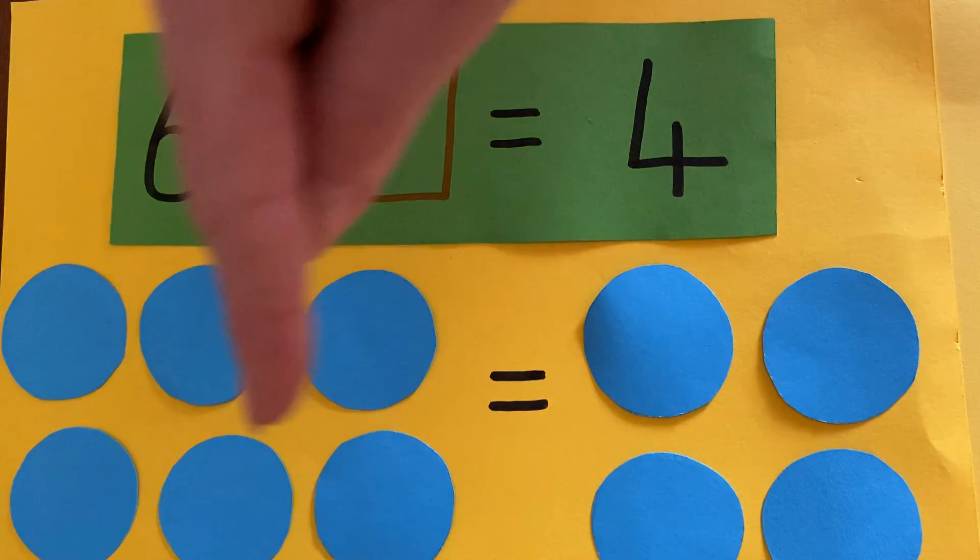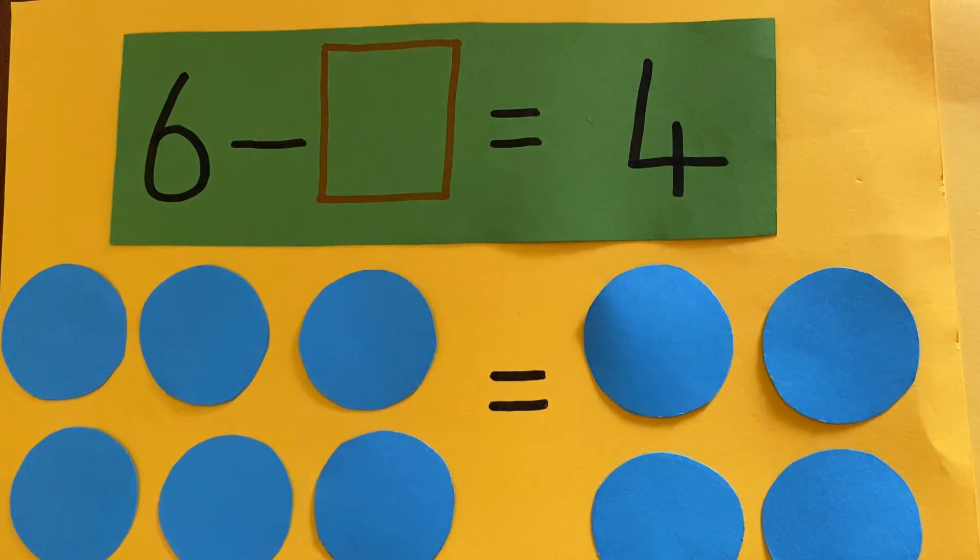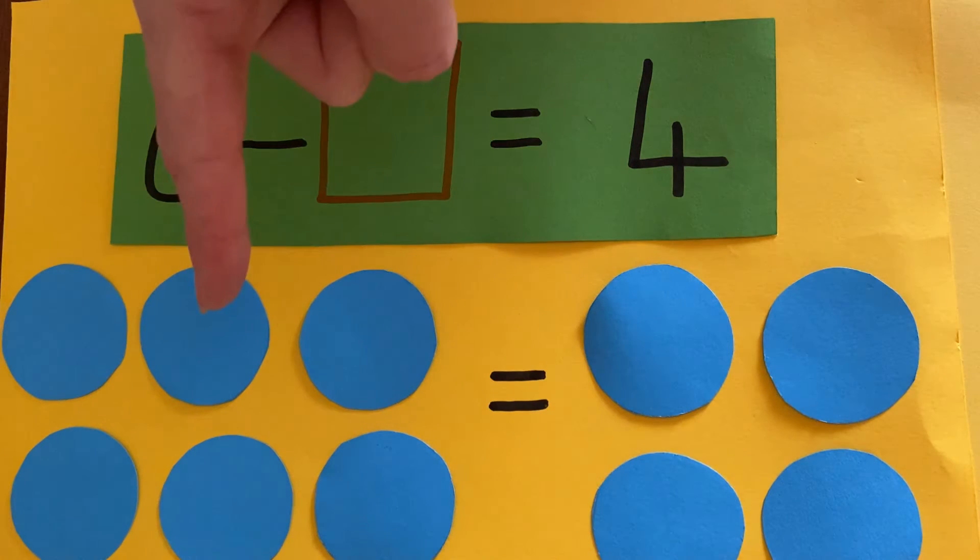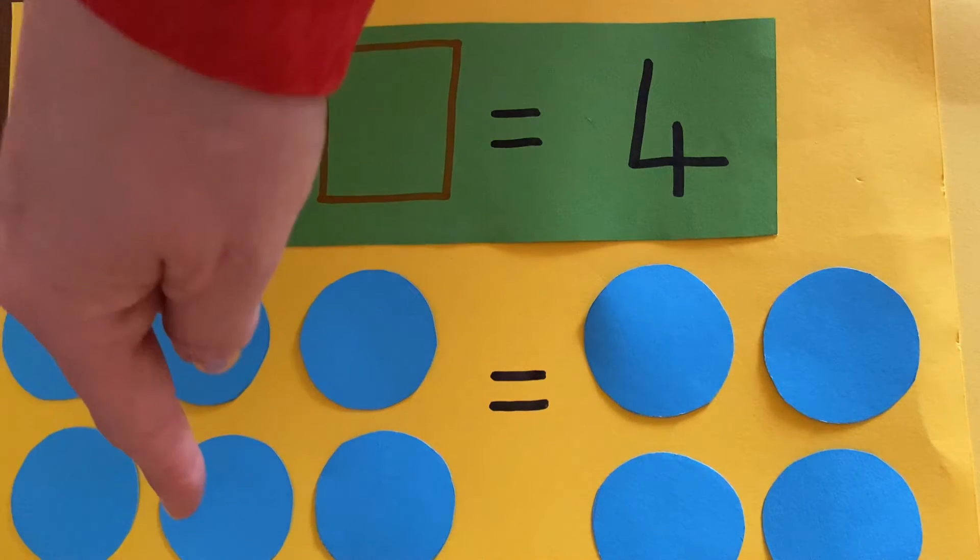Those are definitely not equal. So I have to take some away to make it equal. How many do I need to subtract from this side to make it the same as this side? One, two, three, four.